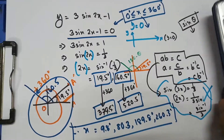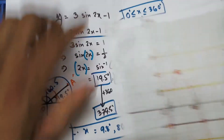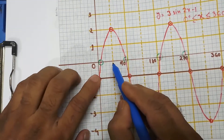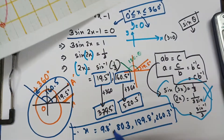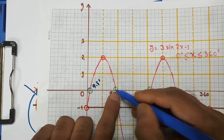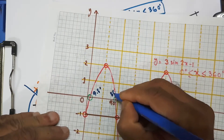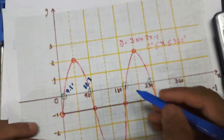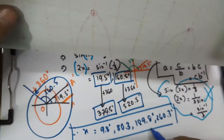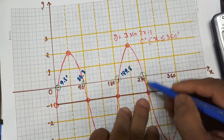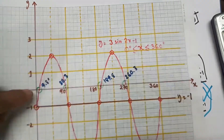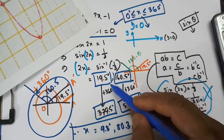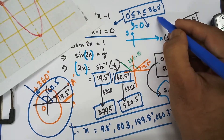The first value, 9.8 degrees, is just below 45 degrees in the first quadrant. 80.3 degrees is just before 90 degrees. 189.8 degrees is just past 180 degrees. And 260.3 degrees is just before 270 degrees. That's four values, all within the 0 to 360 degree range. If you add 360 again, it goes out of range, so we stop here.